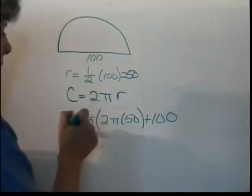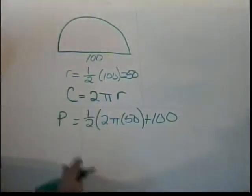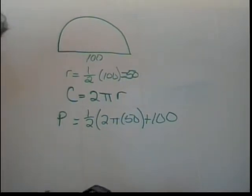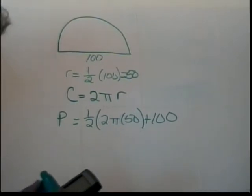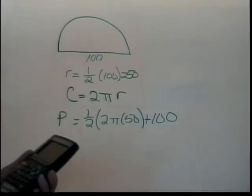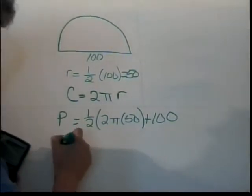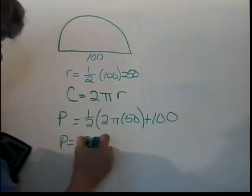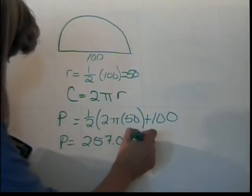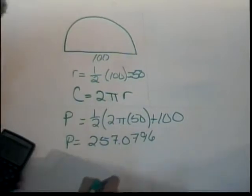So, when we calculate that, we get a perimeter of 257.0796 units.